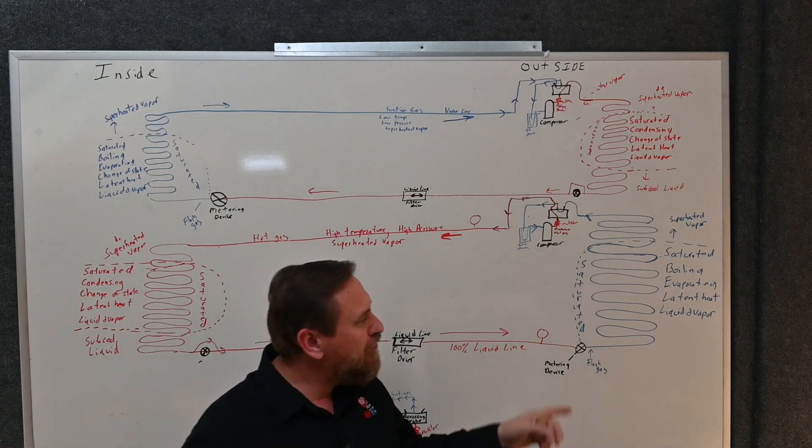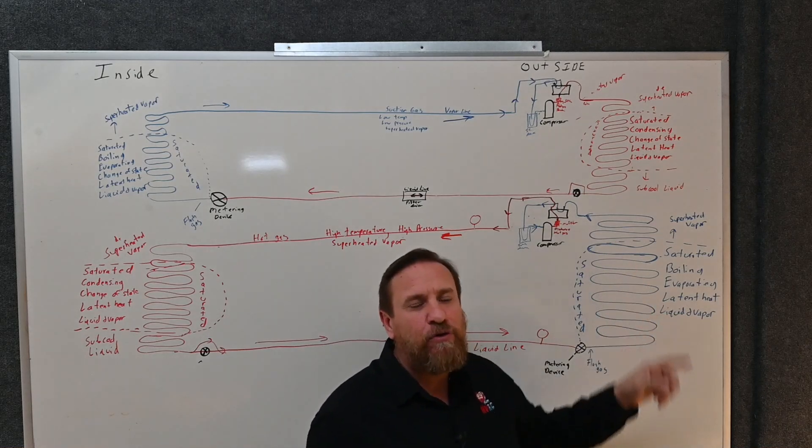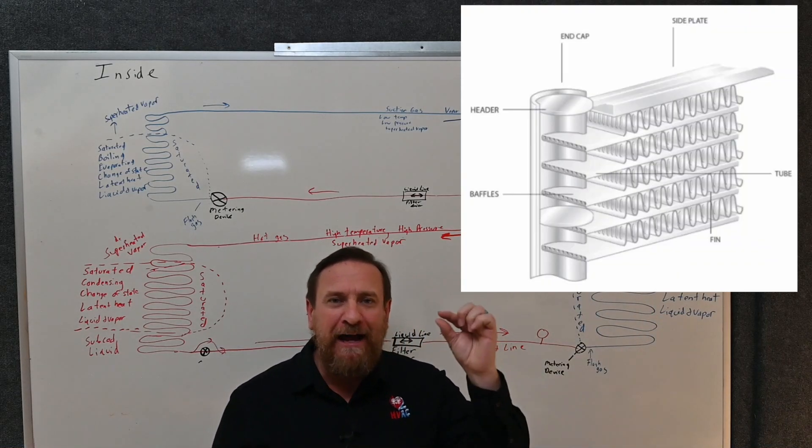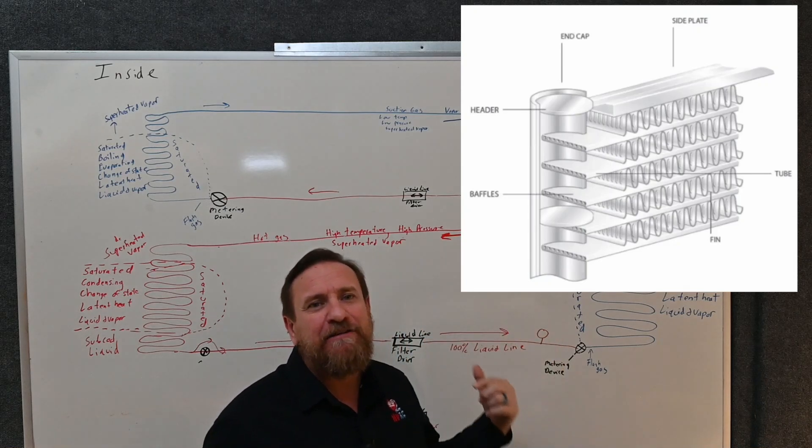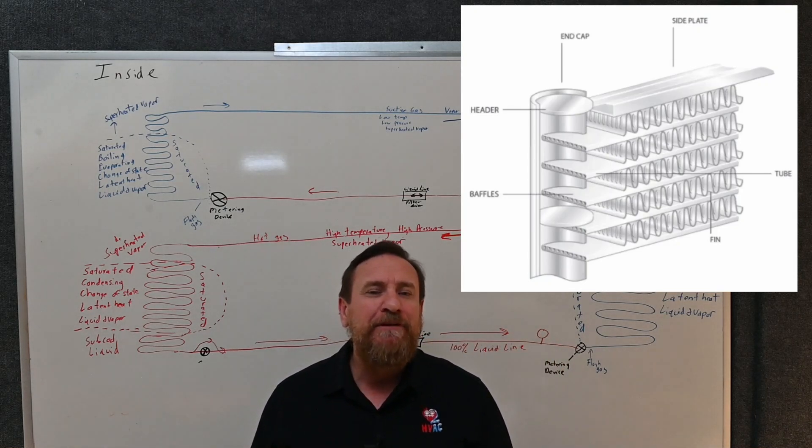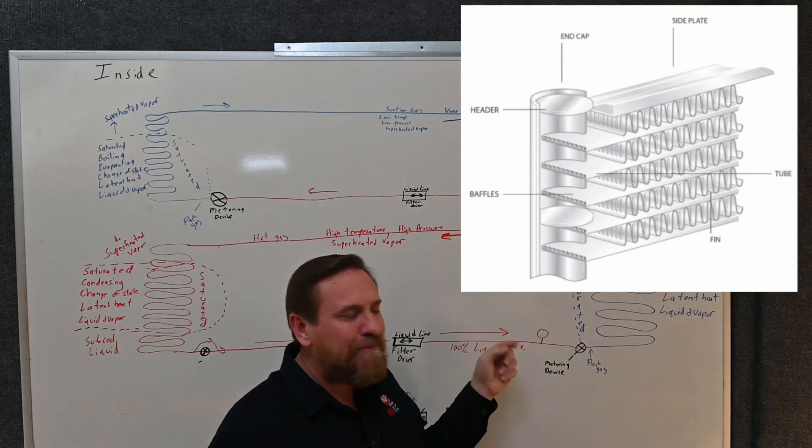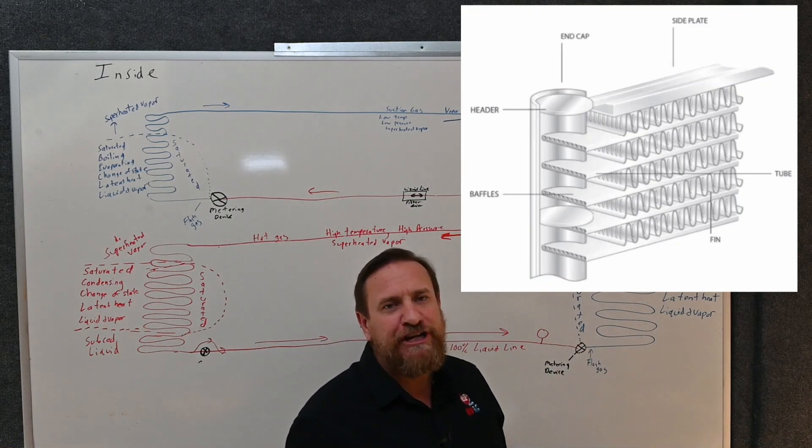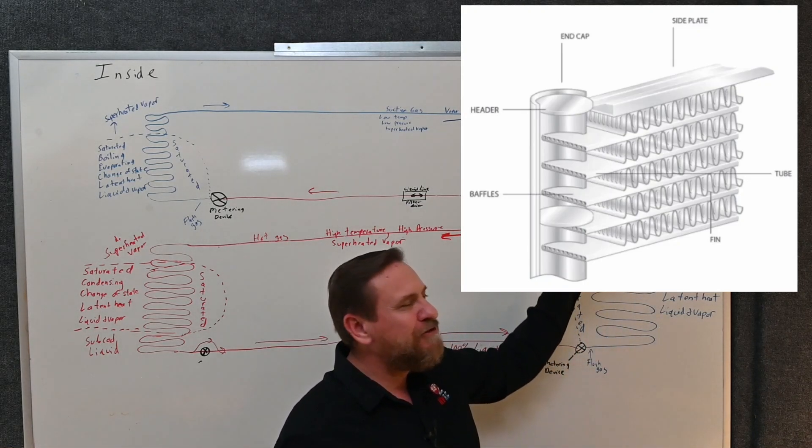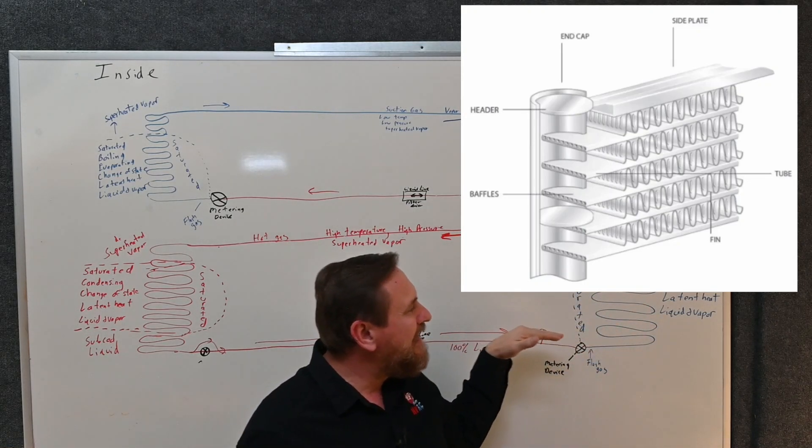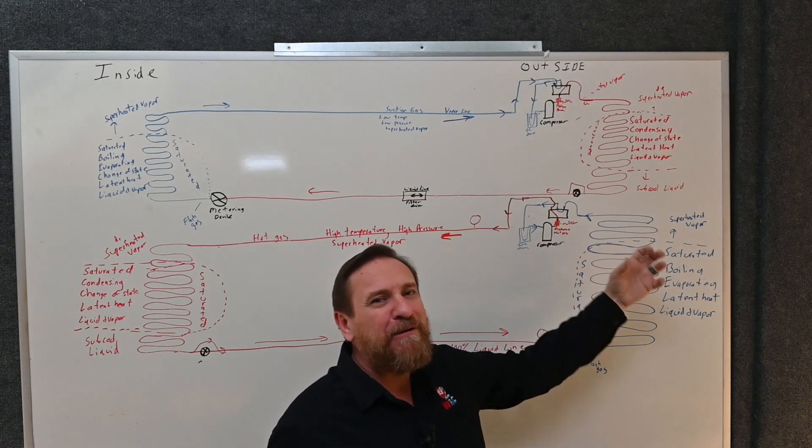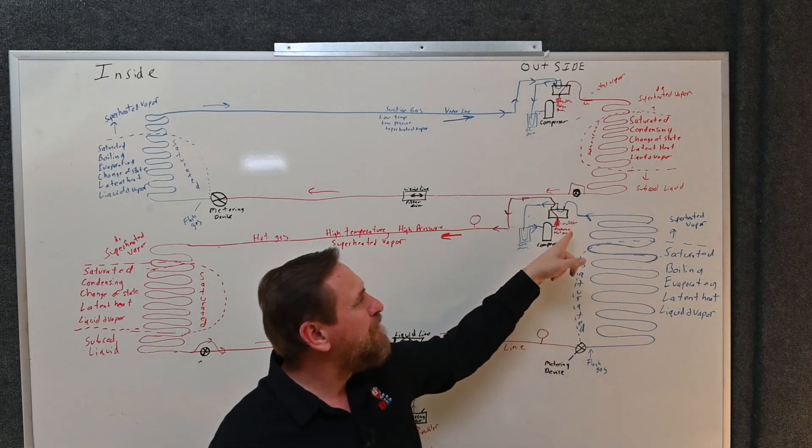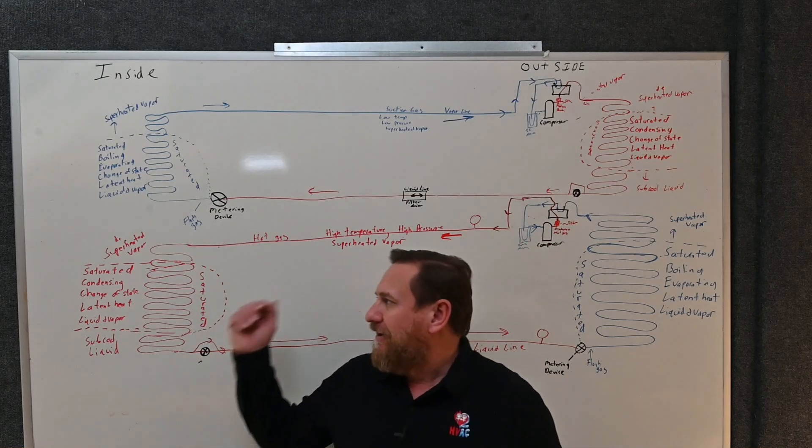It may also be a restriction inside the outdoor coil. A lot of coils now are microchannel, very very small channels. So if somebody's not brazing with the nitrogen flow or not keeping those lines clean, any of that contamination will clog up those little microchannel tubes and it doesn't allow the refrigerant to flow through that outdoor coil. Now we have a restriction. Instead of boiling the refrigerant from a liquid to vapor, absorbing heat, it becomes a restriction. Our suction pressure drops and our head pressure builds.